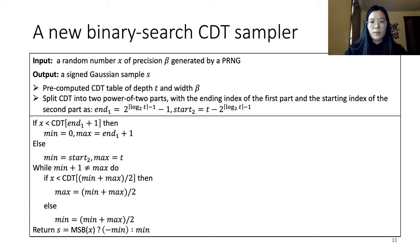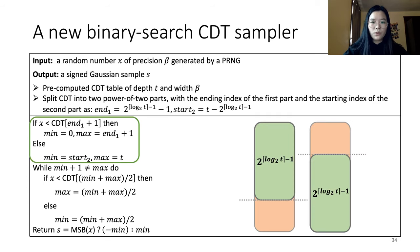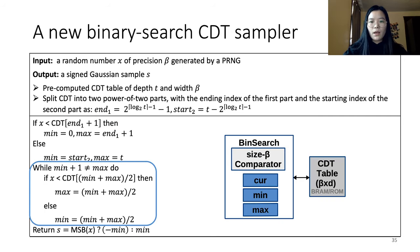Now let's take a look at the design of the CDT sampler. Here is the pseudocode for the binary-search CDT-based Gaussian sampler. Given a random number x and a pre-computed CDT table whose depth is not necessarily a power of 2, you first split the CDT table into two chunks, and later focus your search within the chunk whose depth is a power of 2. Depending on the input random number and the CDT table, you carry out a binary search, and in the end figure out the corresponding row and extract its index, which is sent out as one sample.